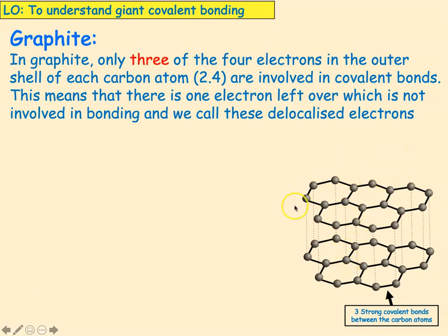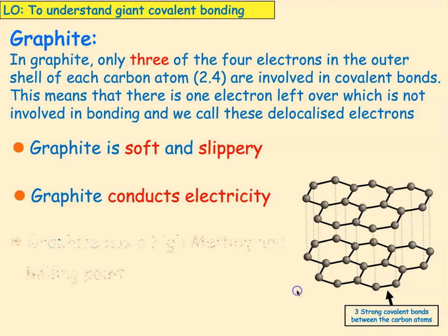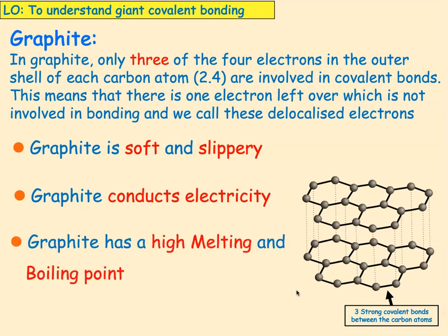You can see what we've got here are lots of layers, and we've got a free electron, which we call a delocalised electron — which we met in metallic bonding. Graphite is soft and slippery, graphite will conduct electricity, and graphite has a high melting and boiling point, but not as high as diamond.